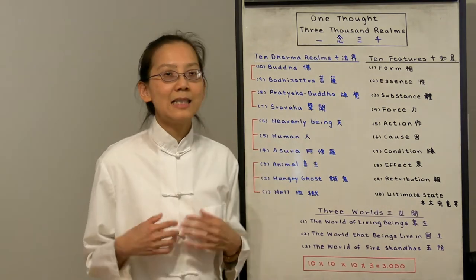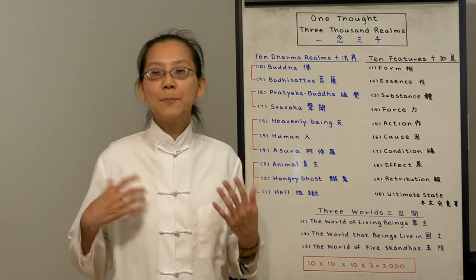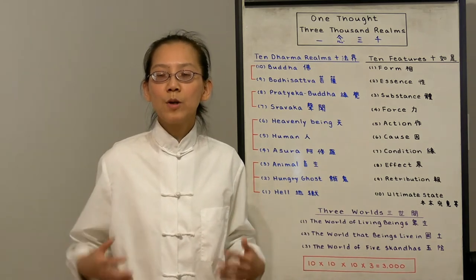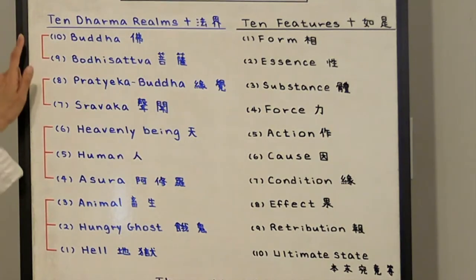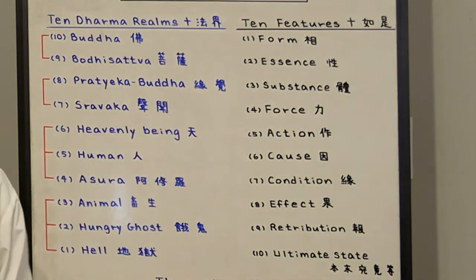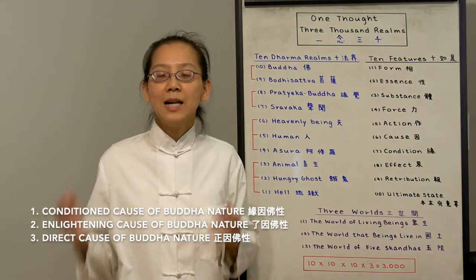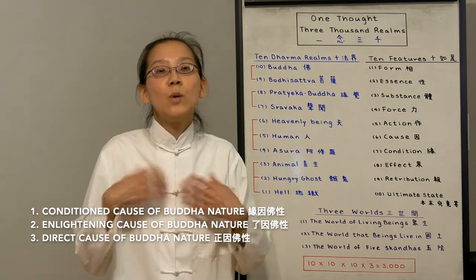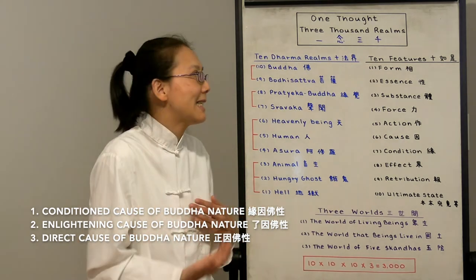Number two is their inner essence. Everybody has their personality. The hell beings, their essence is full of anger. They're always upset, complaining, full of bitterness. In contrast, Buddha—their essence is called the enlightening cause of Buddha nature. It's their perfect wisdom. So wisdom is Buddha's essence.